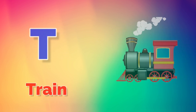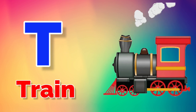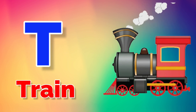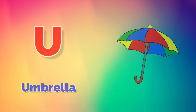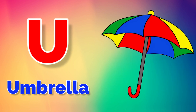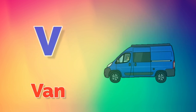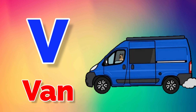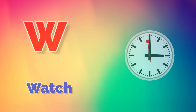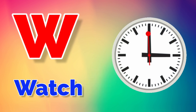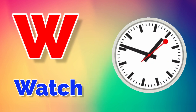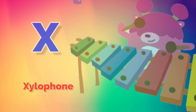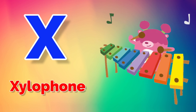S for sun, T for train, U for umbrella, V for van, W for watch, X for xylophone.